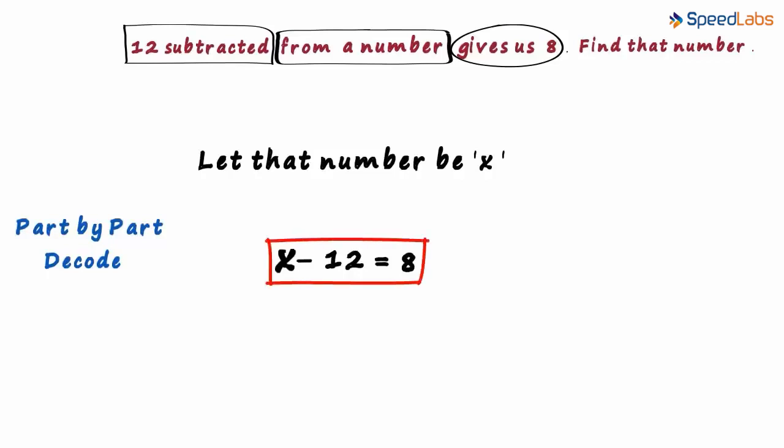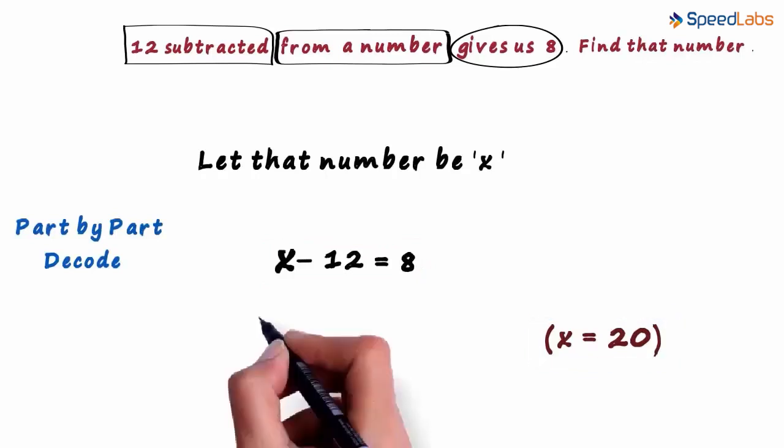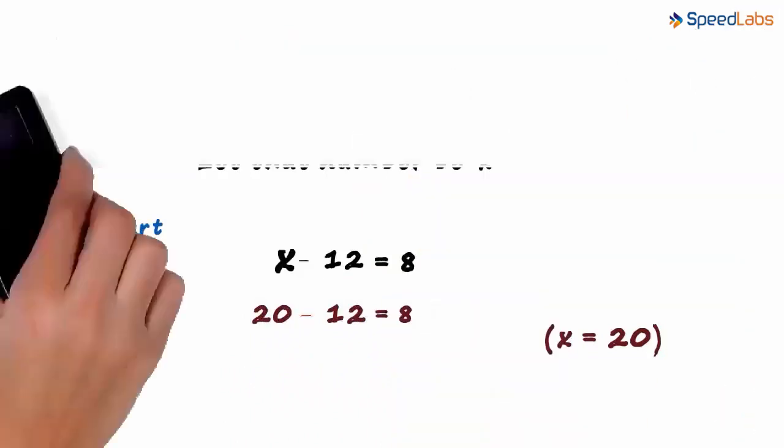Solving this equation will give you x equal to 20. But remember, we are not here to solve equations. Our aim is to just form them. So the number is 20. You can see that 12 subtracted from 20 will give us 8. Let's move on to the next one.